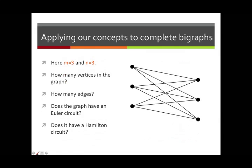Let's look at one more example. Here I've put three vertices on the left and three vertices on the right. How many vertices? Six — that's three plus three. How many edges? Nine, because that's three times three: three vertices on the left each connected to three vertices on the right gives nine possibilities.